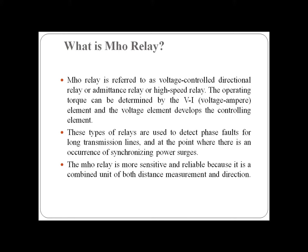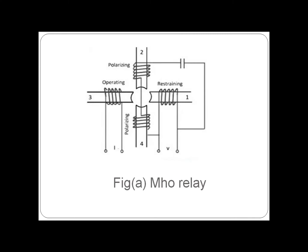This is a basic introduction of the Mho relay. This is a schematic arrangement diagram of a Mho relay. The working principle of the Mho relay depends on the impedance and the directional element. This structure is similar to an induction cup type relay. It has an operating coil, polarizing coil, and restraining coil.